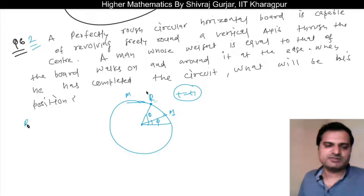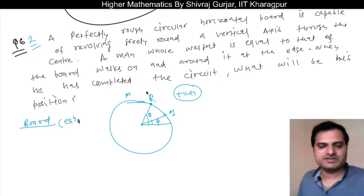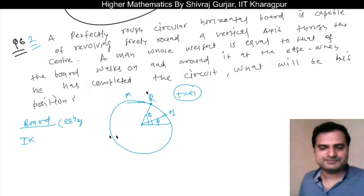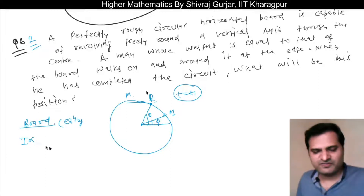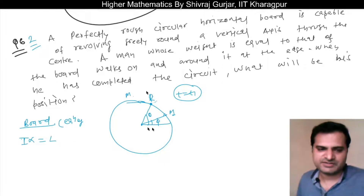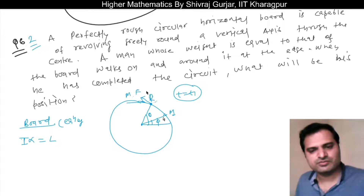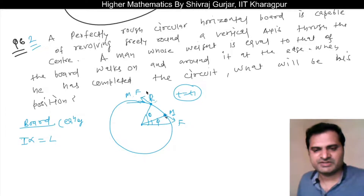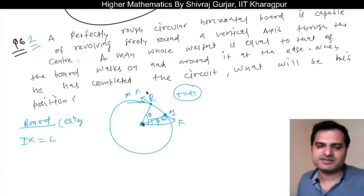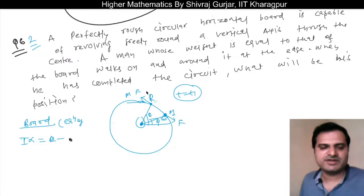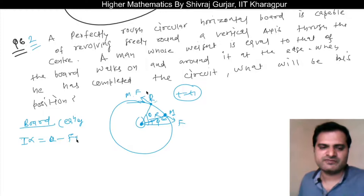Let us take the equation of motion of the board. The board is a rigid body, so the moment of effective forces equals the moment of external forces. The friction acts on the board perpendicular to its radius, and its sense about the axis is negative. So the moment is minus F times R, where R is the radius of the board.